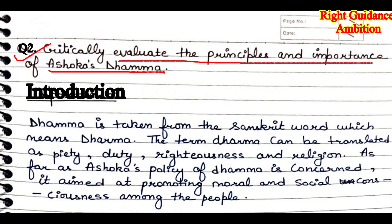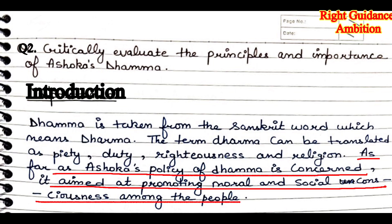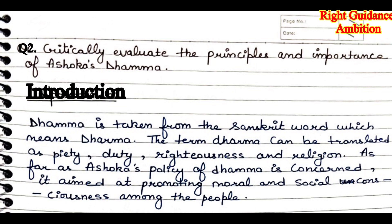Question number 2: critically evaluate the principles and importance of Ashoka's Dhamma. Who was Ashoka, and what was his policy of Dhamma? In this question, we have to discuss this. For the introduction: Dhamma is taken from the Sanskrit word which means Dharma. The term Dharma can be translated as piety, duty, rightness, and religion. As far as Ashoka's policy of Dhamma is concerned, it aimed at promoting moral and social consciousness among the people.